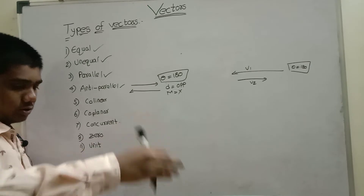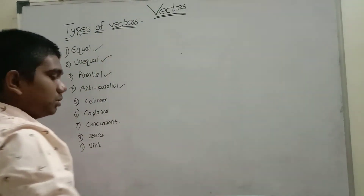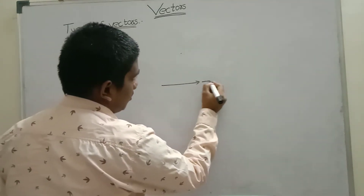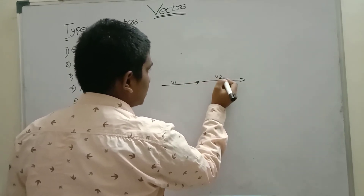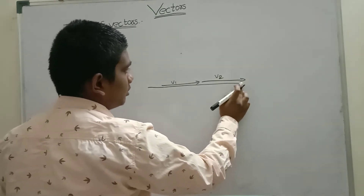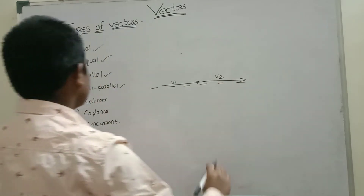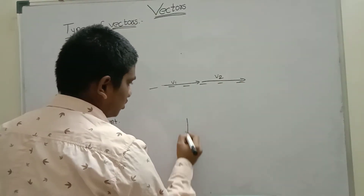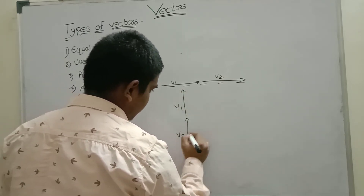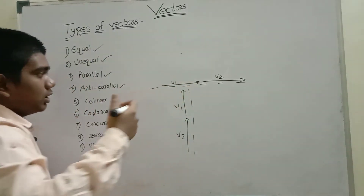Collinear vectors: if two vectors are on the same line, they are said to be collinear. If you draw an imaginary line through them, they lie on the same line. Even if you shift one or change orientation to horizontal, they are also collinear.